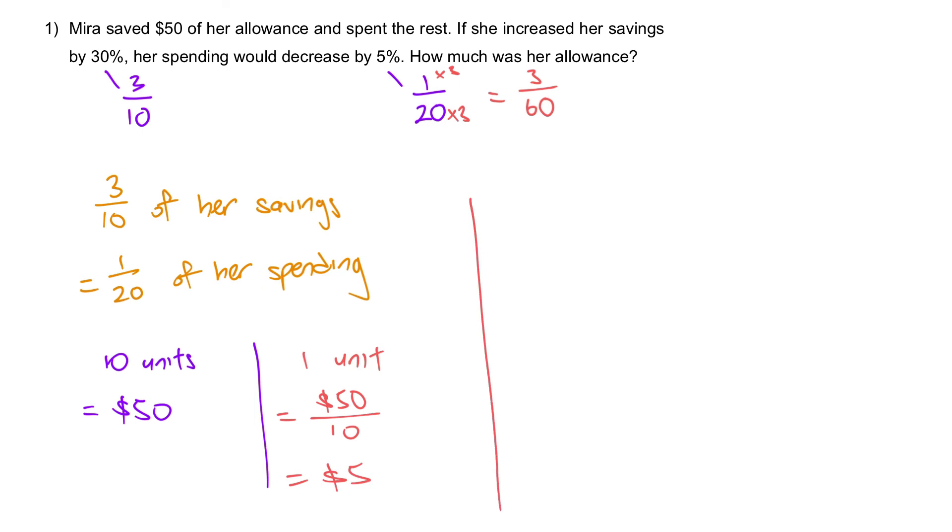Next, to figure out the allowance amount, which is 70 units (10 plus 60), it's $5 times 70 to give us the answer of $350.